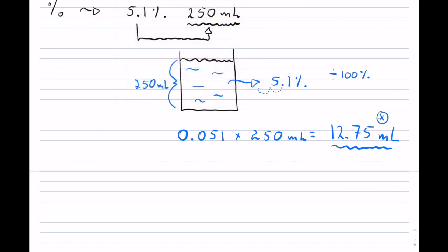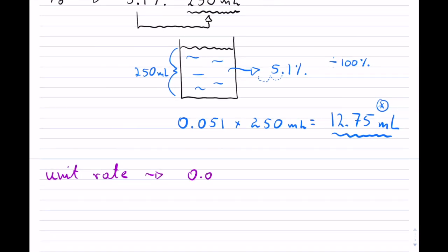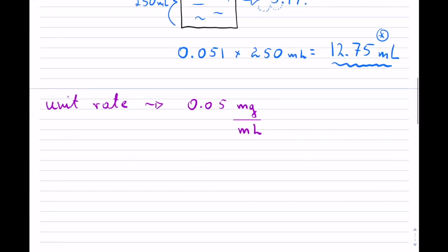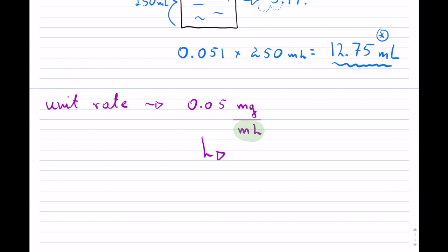The second type is the unit rate. Unit rates don't use percent — they directly tell us how much we have. This one is much easier because we don't have to do many calculations. For example, 0.05 milligrams per milliliter — the key point here is that it is per one milliliter, meaning the dissolved medication has 0.05 milligrams for every one milliliter of that solution.